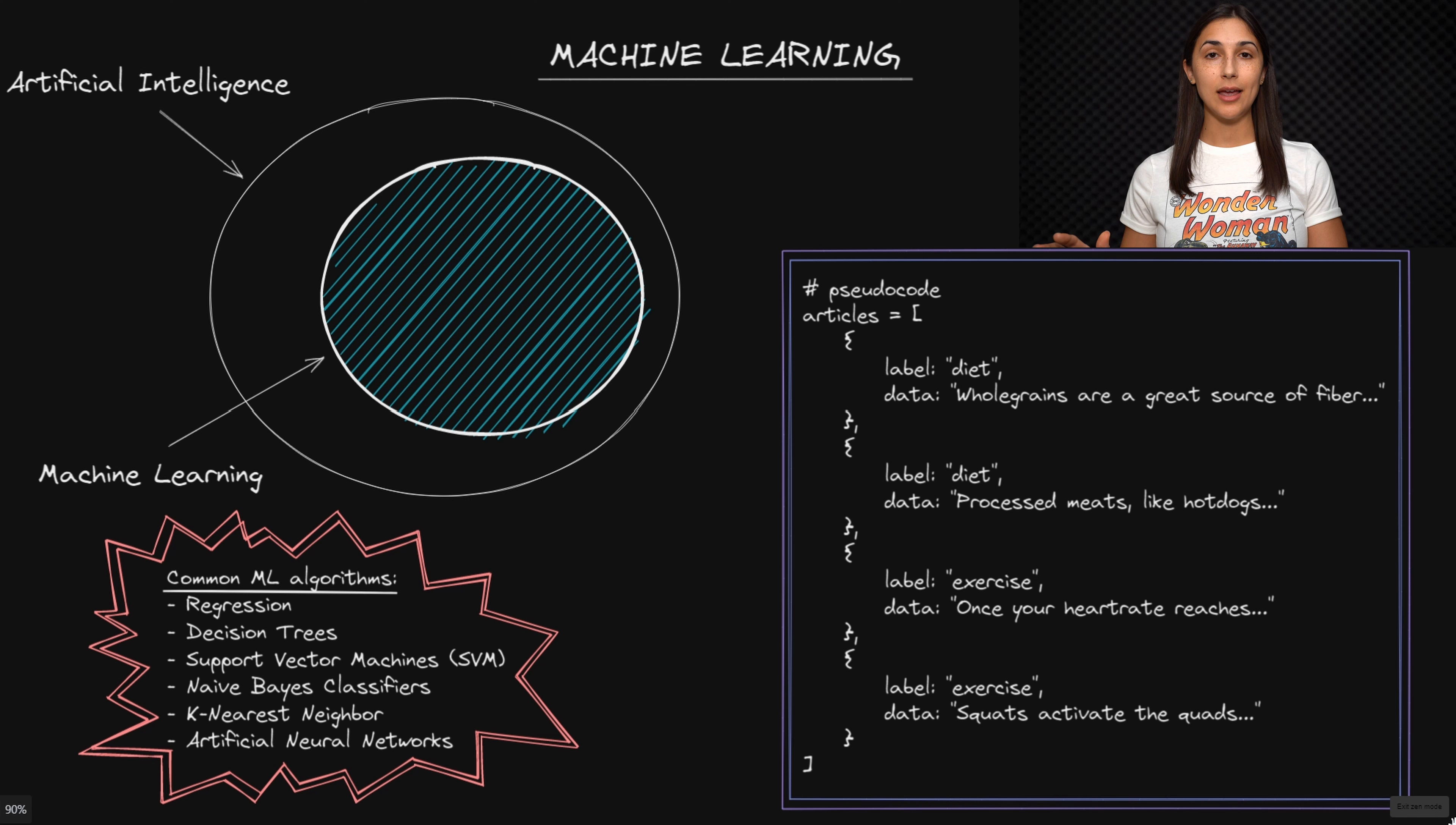Let's think about a simple example where we can contrast a traditional programming approach to a machine learning approach to doing a certain task. Suppose our task is to classify articles from a given health magazine to be either about diet or about exercise. A traditional programming approach might be to make a list that contains words that we think are more diet oriented or more exercise oriented.